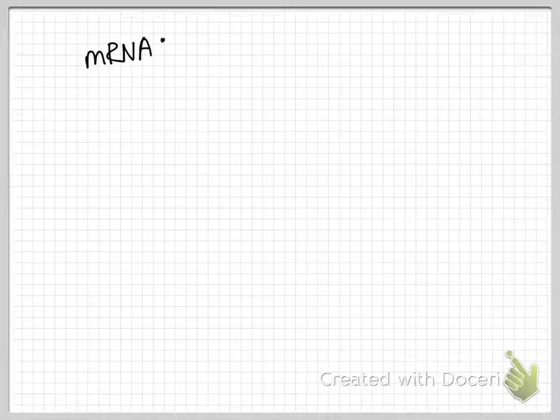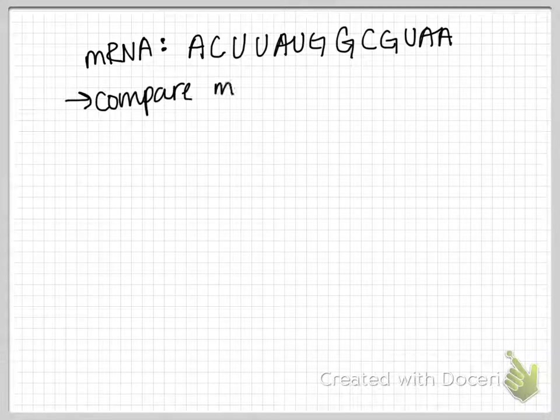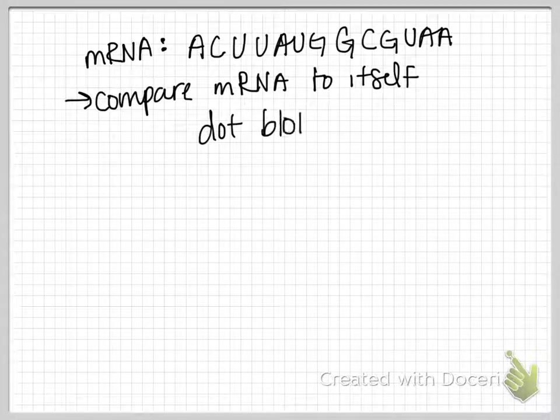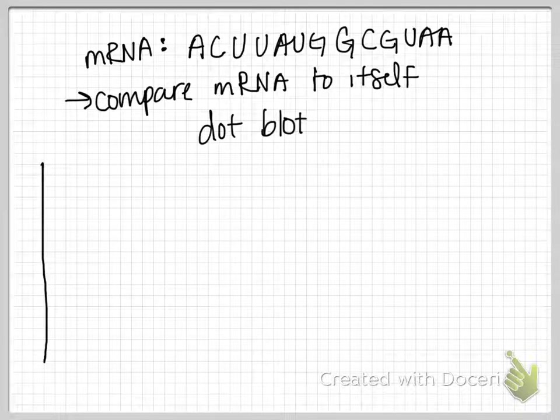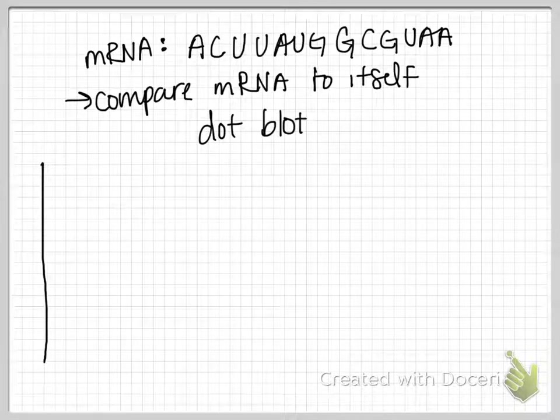If we just take a very simple toy example of an mRNA sequence I've written out, how can we use a dot blot to compare this mRNA sequence to itself? When we compare the mRNA sequence to itself, it should reveal pretty obviously that these are the same two sequences.